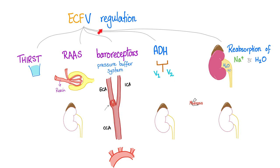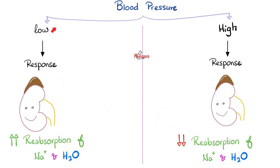When I lost blood in that car accident, my extracellular fluid volume decreased. The body regulates extracellular fluid volume through many mechanisms, including the kidney. When blood pressure drops, the kidney responds by increasing reabsorption of sodium and water to raise blood pressure. When blood pressure increases, the kidney decreases reabsorption of salt and water — increasing excretion — to decrease blood pressure back to normal. Homeostasis.